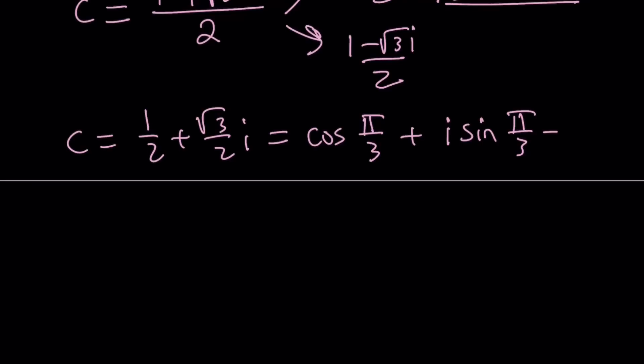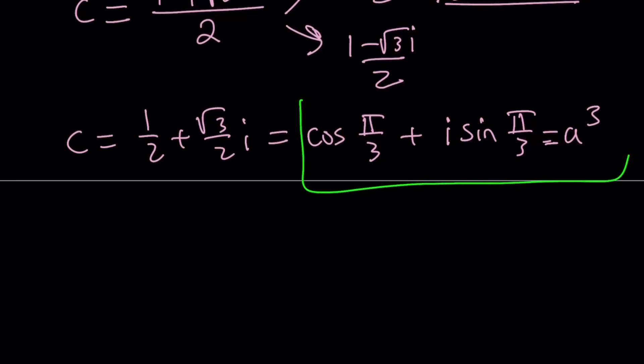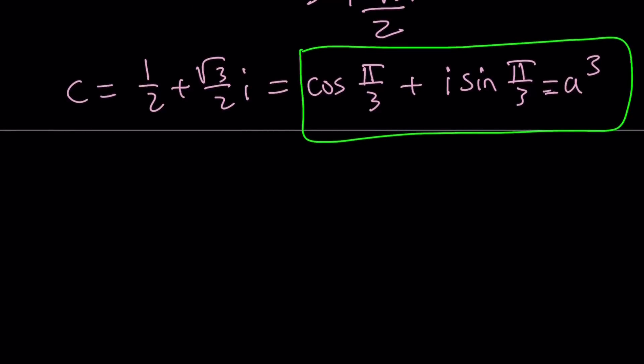But this is a³. So I have to cube root this number. But cube rooting complex numbers is super-duper easy if you know the rule. What is that called? De Moivre? I can never say that name. But all you have to do is take the argument and then divide by 3. Isn't that easy?